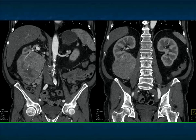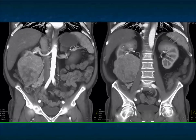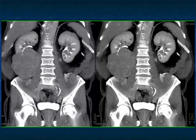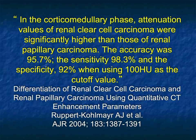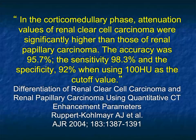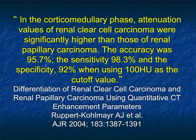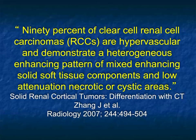Clear cells are typically larger than papillary renal cell carcinoma, which has very nice neovascularity, as well as adenopathy seen as we go through the arterial, venous, and excretory phase images. Regarding attenuation values of clear cell versus papillary: accuracy is 95.7 percent, sensitivity 98.3 percent, and 92 percent specificity with 100 as the cut-off value. The higher a lesion is over 100, the more likely it is a clear cell, and if it's 150, it's always going to be a clear cell.